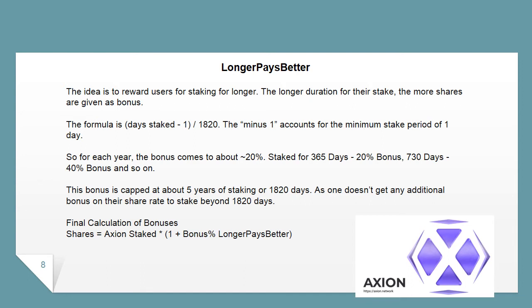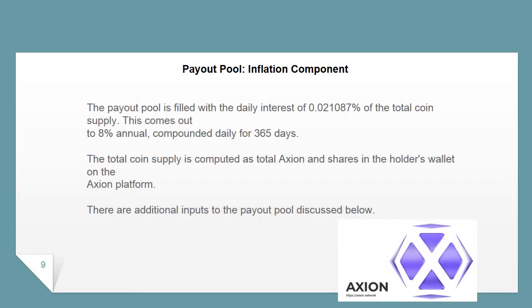The final calculation of bonuses is: Shares = Axion staked × (1 + bonus percent from 'Longer Pays Better'). The payout pool is filled with the daily interest of 0.021087% of the total coin supply, which comes out to 8% annual compounded daily for 365 days. The total coin supply is computed as total Axion and shares in the holder's wallet on the Axion platform.